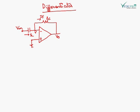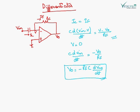This is the circuit used to find the differentiation of the input. I1 equals IC equals IF, as given by this expression. The circuit output gives the differentiation of the input.